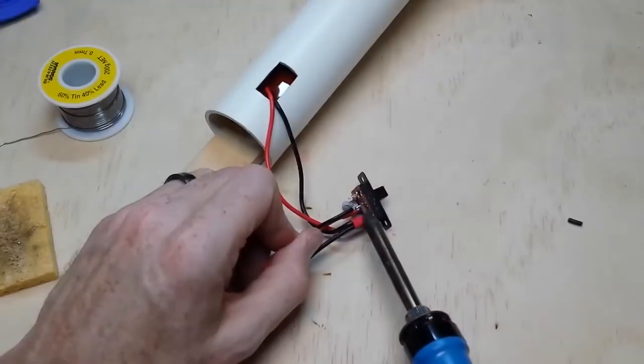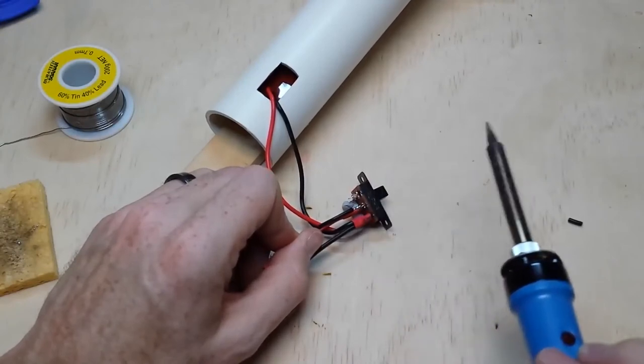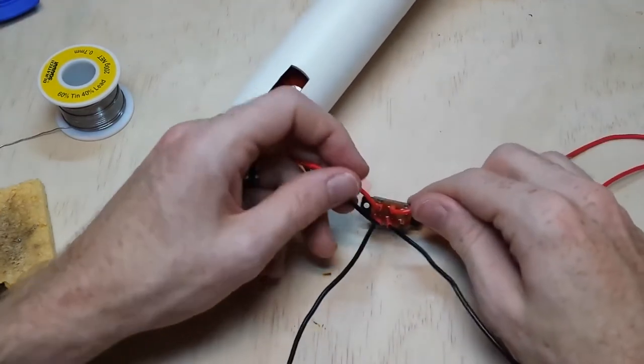Then, in line with the other red wire already on the switch, connect this one to the center leg. Do the same again with the black wire.